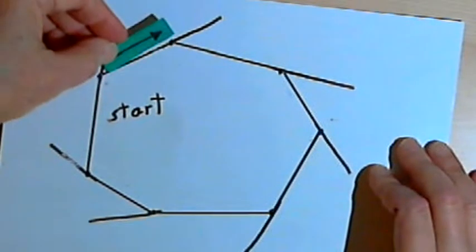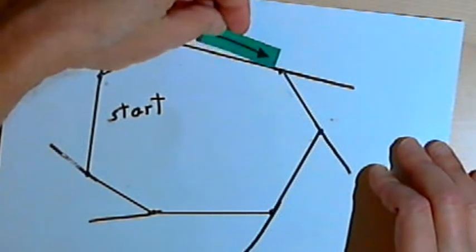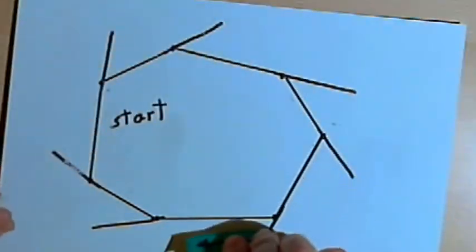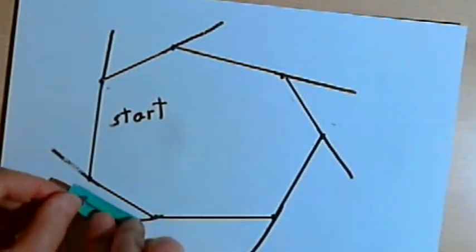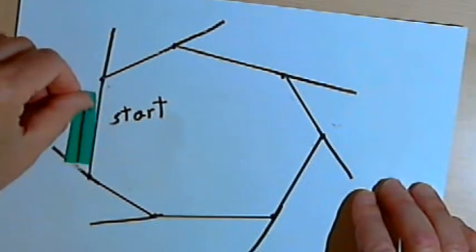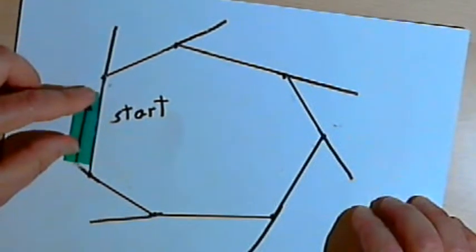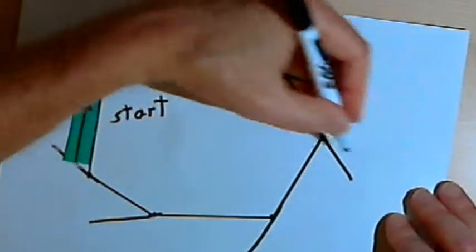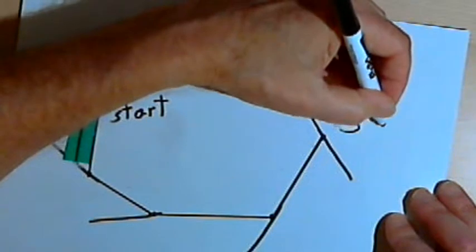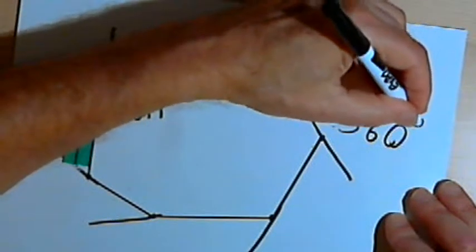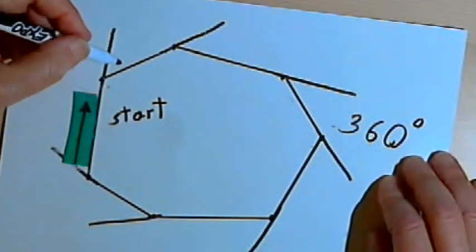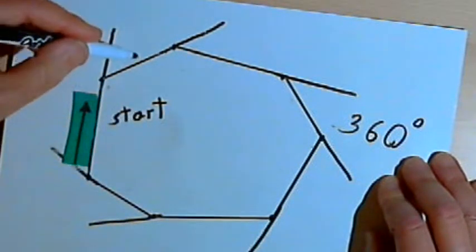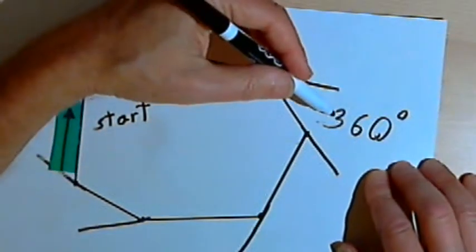I'll do that again. So the arrow is constantly turning. As it goes around, it's rotating and it's rotated one time. Rotating one time means it's rotated 360 degrees. So for this polygon, the sum of the exterior angles would be how much it rotated as it went through all those angles — and it rotated 360 degrees.